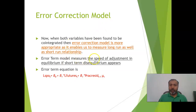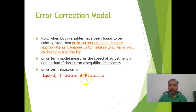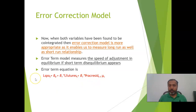The Error Correction Model measures the speed of adjustment to equilibrium if short-term disequilibrium appears. The equation includes the log of spot prices as the dependent variable, and we include the lagged value of the residual from the original regression equation as an independent variable — this is basically the error correction term. I will now show how to run it in eViews.